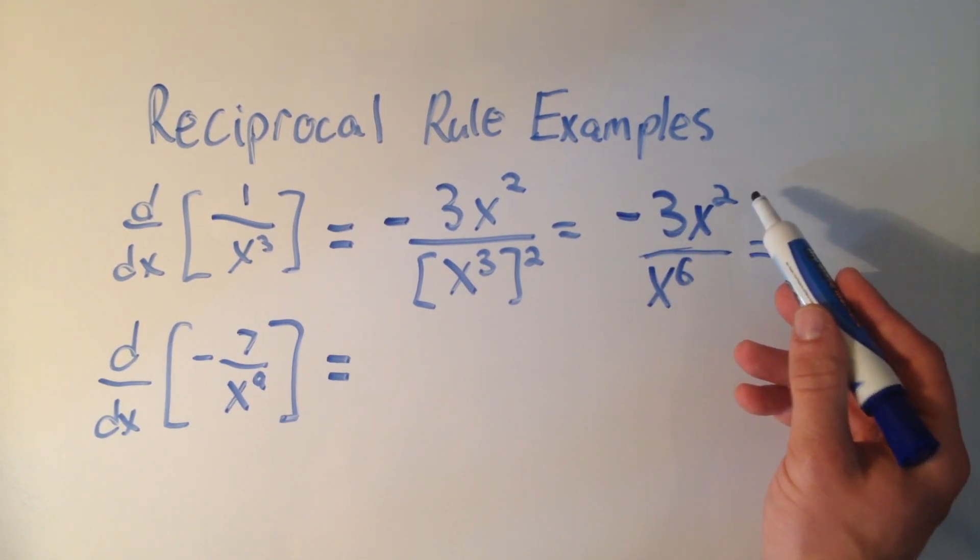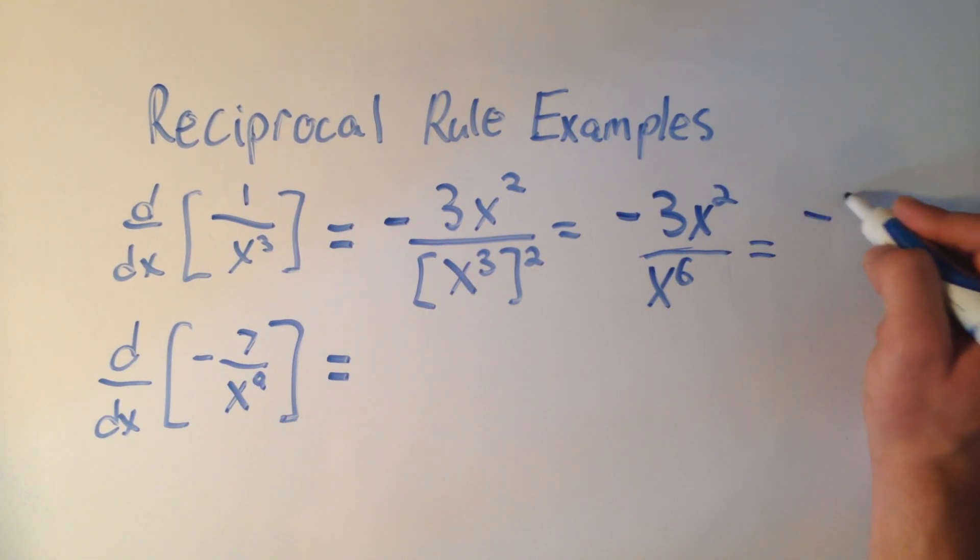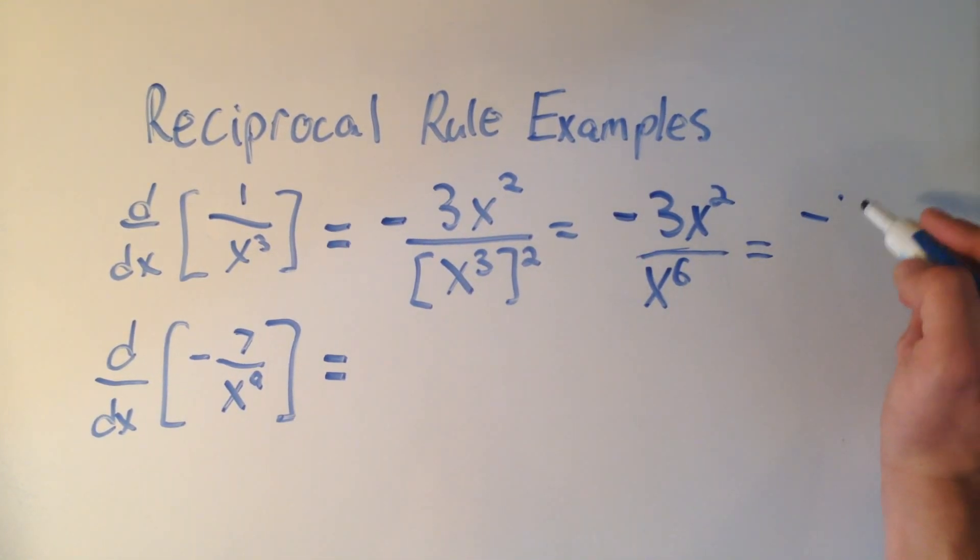And now x squared over x to the 6th, hopefully you can see this, I can cancel that x squared on top and write that as minus 3 over x to the 4th.